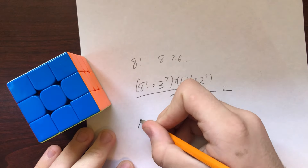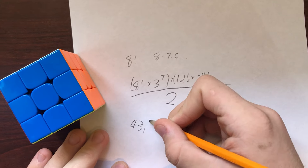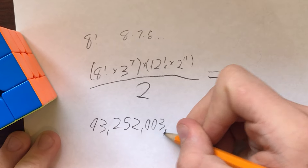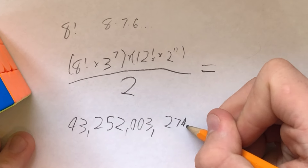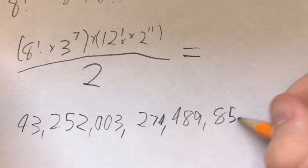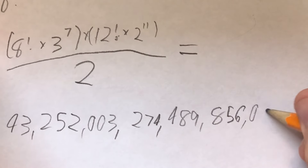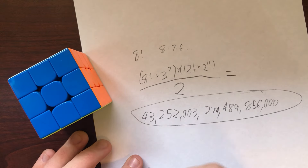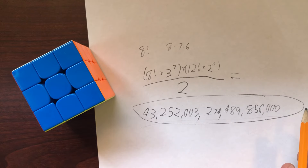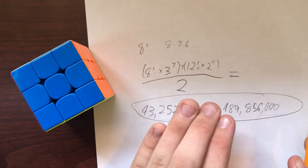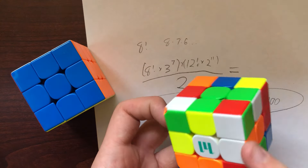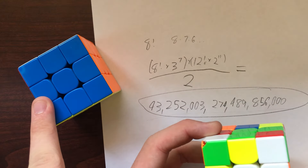And the answer is 43 quintillion, 252 quadrillion, 3 trillion, 274 billion, 489 million, 856,000. That is our answer. One over this number is the chances of matching a solved cube to a scrambled cube — and in fact, that is the same chances of taking a scrambled cube and matching it to the solved cube.